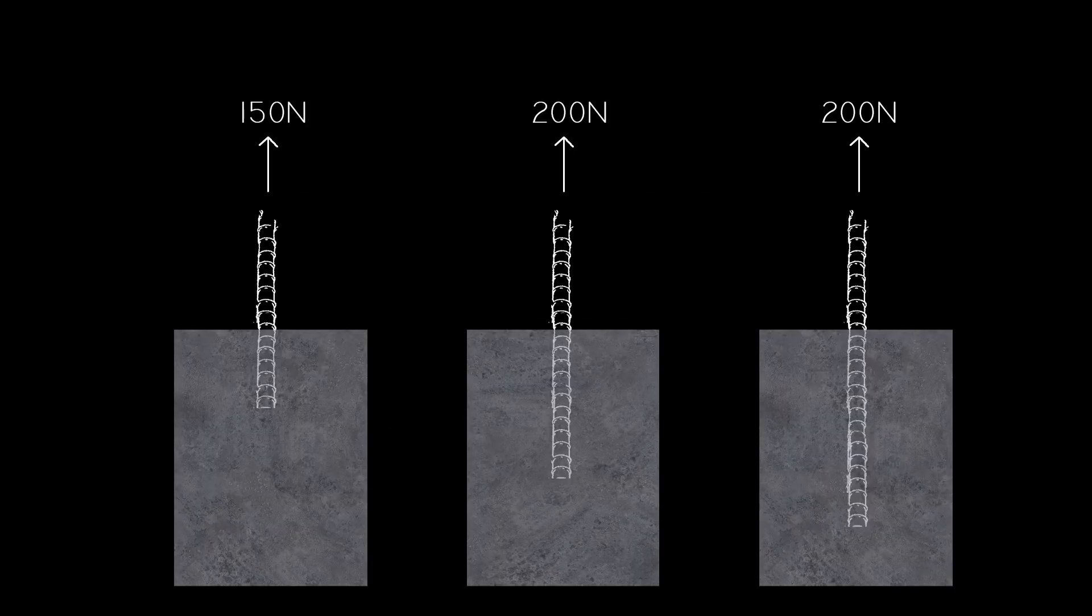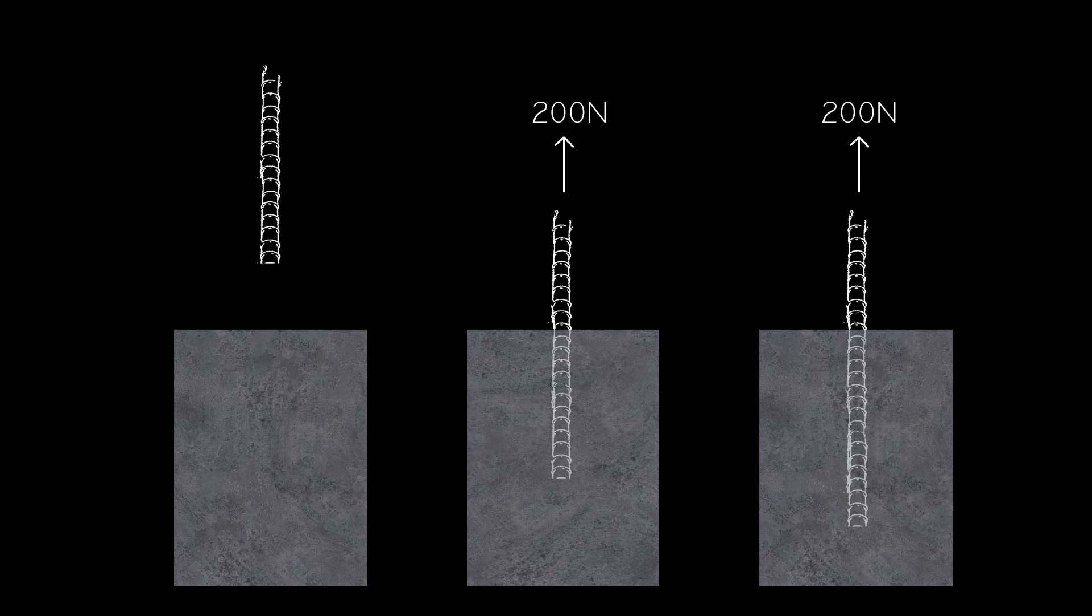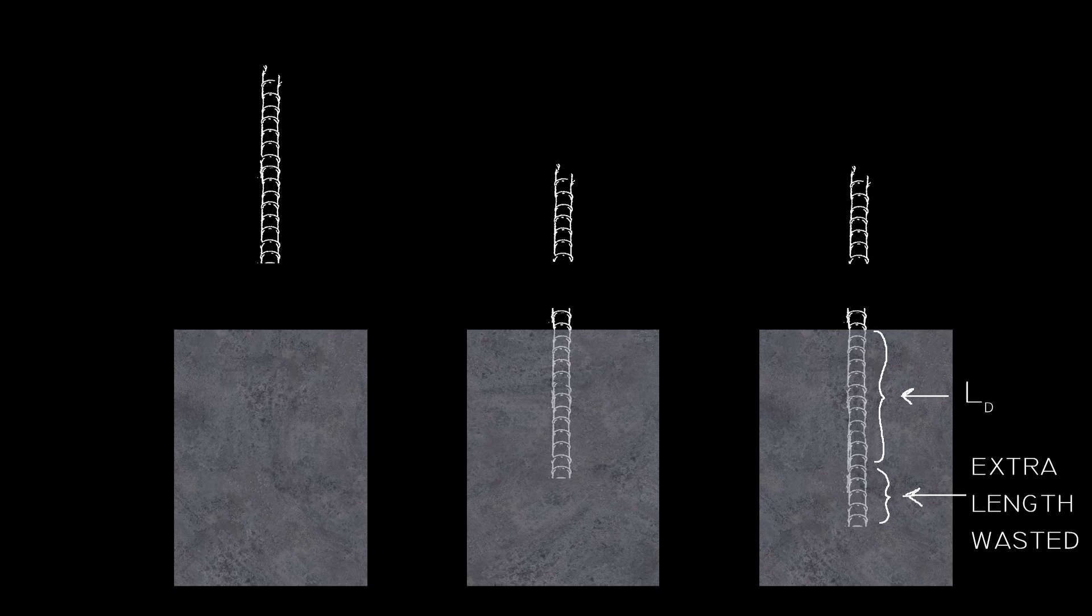So let's say these three bars yield at 200 newtons. The first one will pull out, the second one is optimal and the third one is just a waste of material because it will still break at 200 newtons.